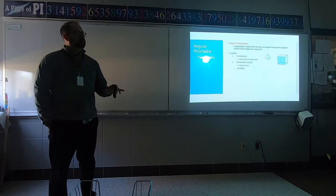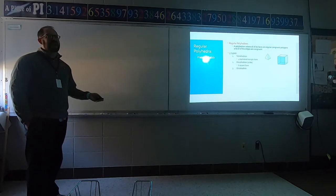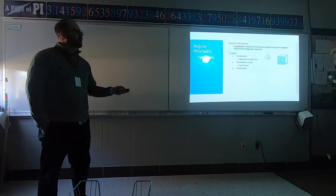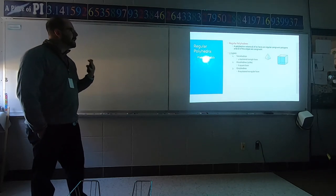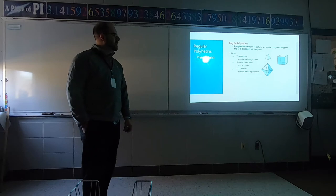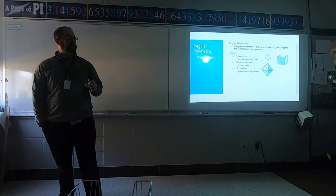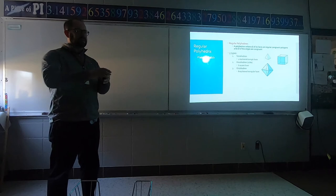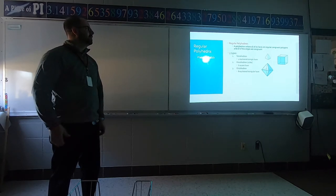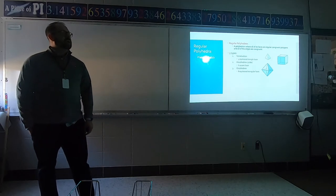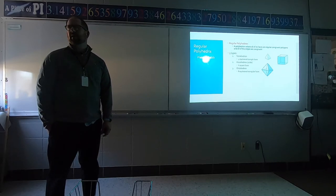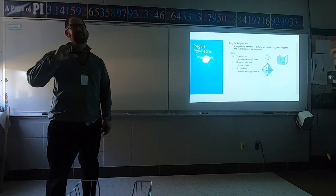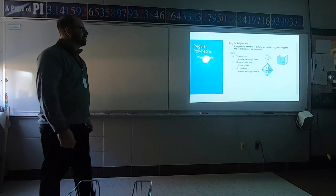Third type: an octahedron — how many sides? Eight. It has eight equilateral triangle faces. Think of it as a square pyramid like the Great Pyramid of Giza, but imagine a perfect mirror reflection of it connected to the bottom. Some of you may recognize this — in the computer game The Sims, there's a little icon above your Sim; I believe that's always been a little octahedron.